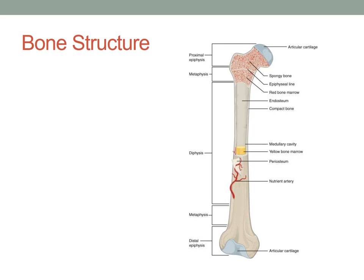Between the diaphysis and the epiphysis, you see an area called the metaphysis. This area is where bone growth occurs. As we are growing — from birth to approximately the late teens, maybe early 20s — this is the area where bone growth occurs, and we'll talk about that a little bit later.